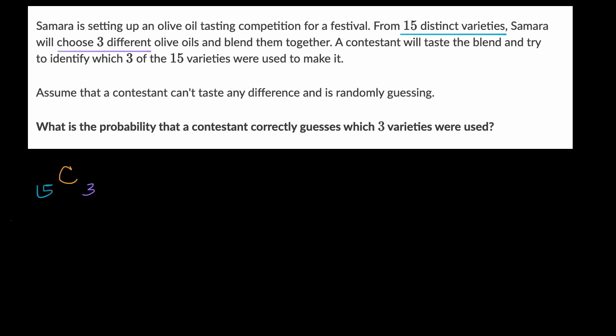So some of you might have been tempted to say, hey, let me think about permutations here. And I have 15 things. And from that, I want to figure out how many ways can I pick three things that actually has order mattering. But this would be the situation where we're talking about the contestant actually having to maybe guess in the same order in which the varieties were originally blended or something like that.